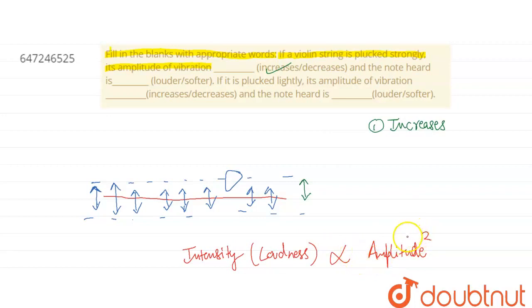So basically, loudness is directly proportional to amplitude square. Mathematically, amplitude square. So it means as the amplitude is increasing, loudness is increasing. And loudness is increasing in square times. So the note heard is also very louder, right? Louder.